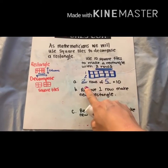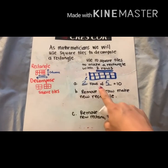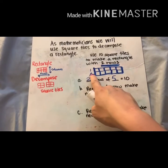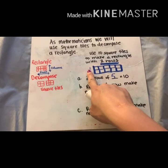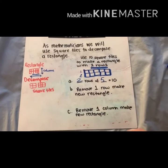Now the next problem is telling us to remove one row. So we're decomposing, we're breaking it apart. Remove one row. So if I go back and I look at my picture, oh yeah, if I take this row off, that's removing one row.